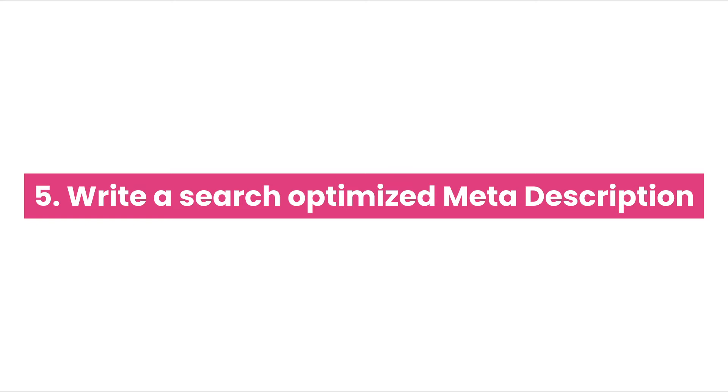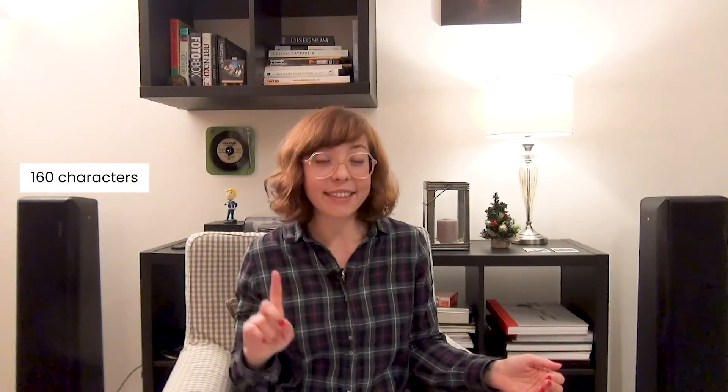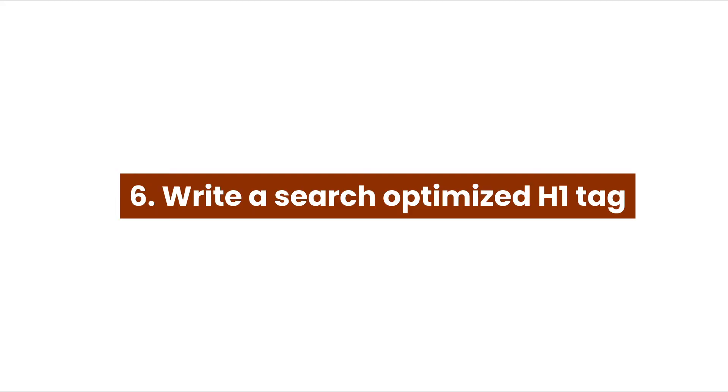Tip 5: Write a search-optimized meta description. The meta description is what appears in search results under your title tag. A well-written meta description can be the difference between getting the click and not. Be informative, use a call to action, include your focus keyword or its synonym, and make sure your meta description is no longer than 160 characters.